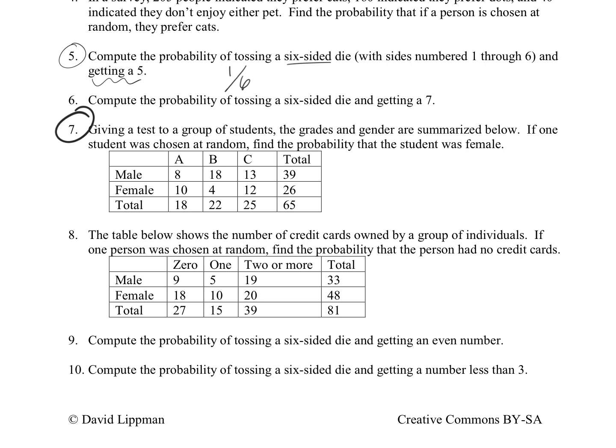For number seven, it says we're going to give a test to a group of students. The grades and gender are summarized below. So we have these male students and these female students. If one student was chosen at random, find the probability that that student was female. So if we look at the female row, there's a total of 26 female students here in this group of students, and the total students that we have is 65. So we're going to have 26 out of 65.